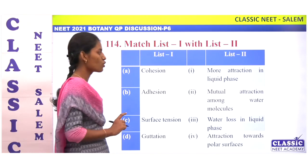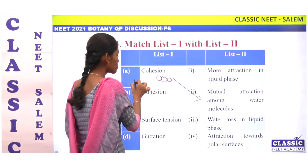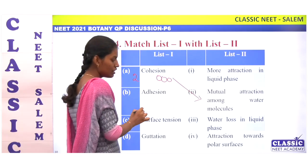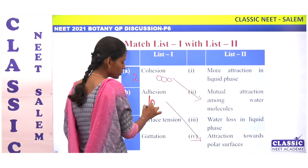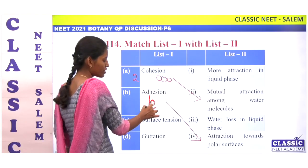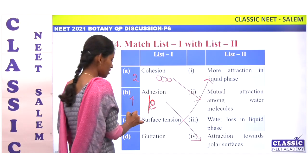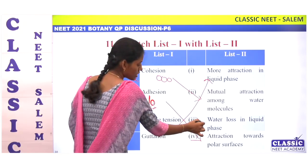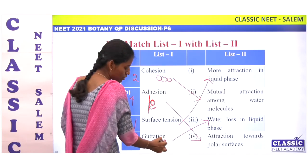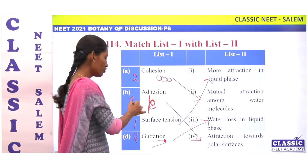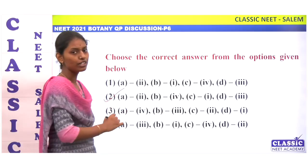Next match: cohesion is the mutual attraction among water molecules — A is 2. Adhesion is attraction towards a polar surface, as in xylem wall — B is 4. Surface tension is more attraction in the liquid phase — C is 1. Guttation is water loss in its liquid phase from leaves as water droplets — D is 3. So the match is 2, 4, 1, 3. Option 2.